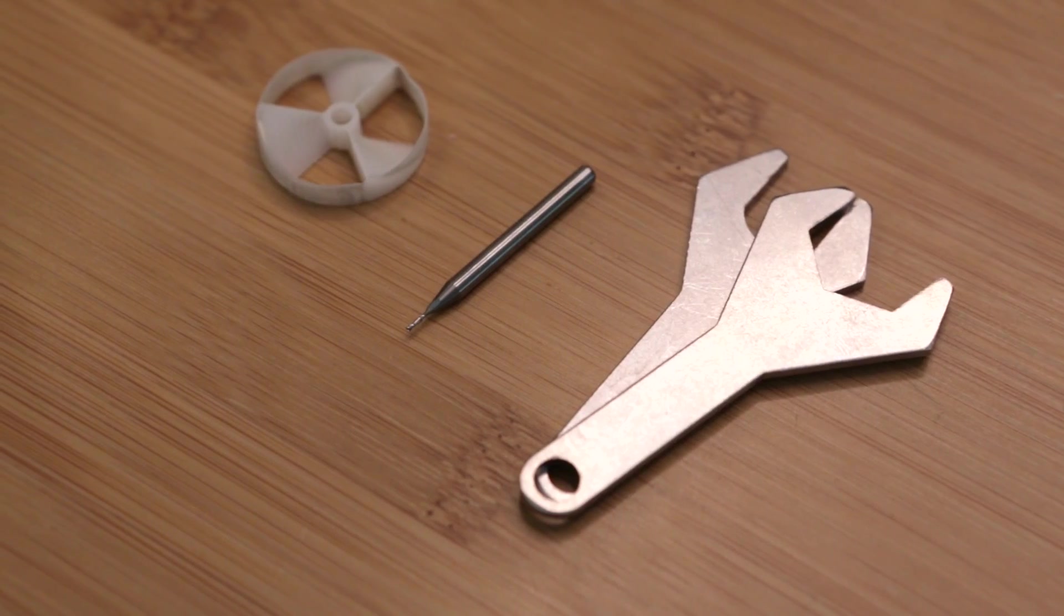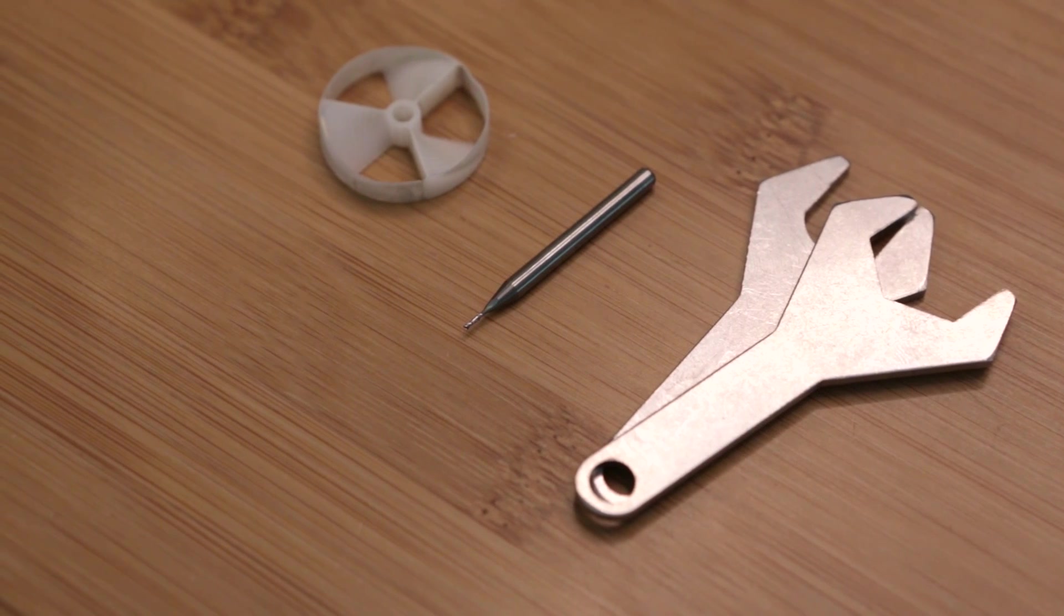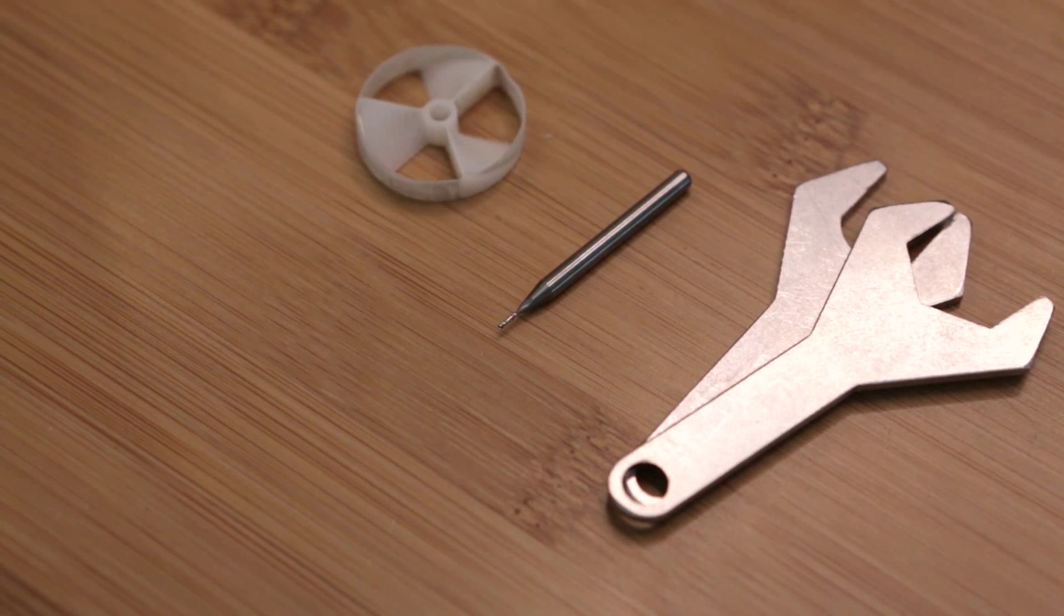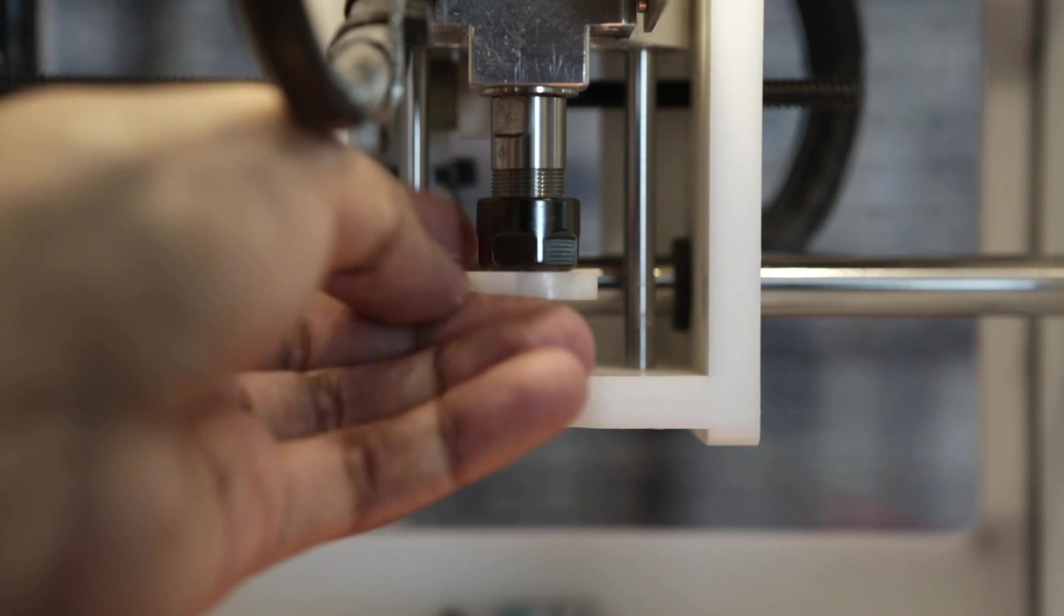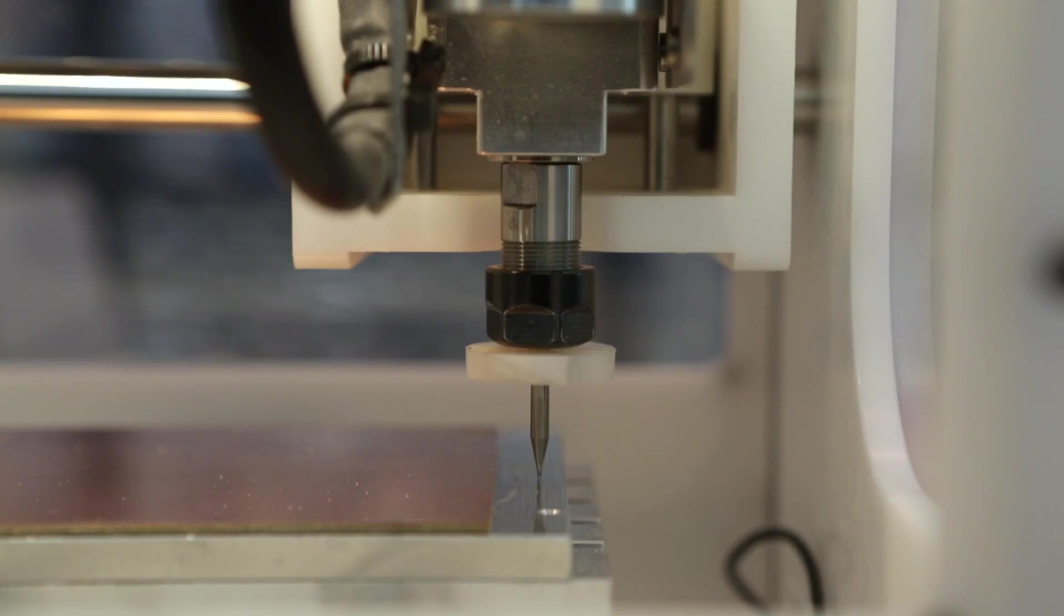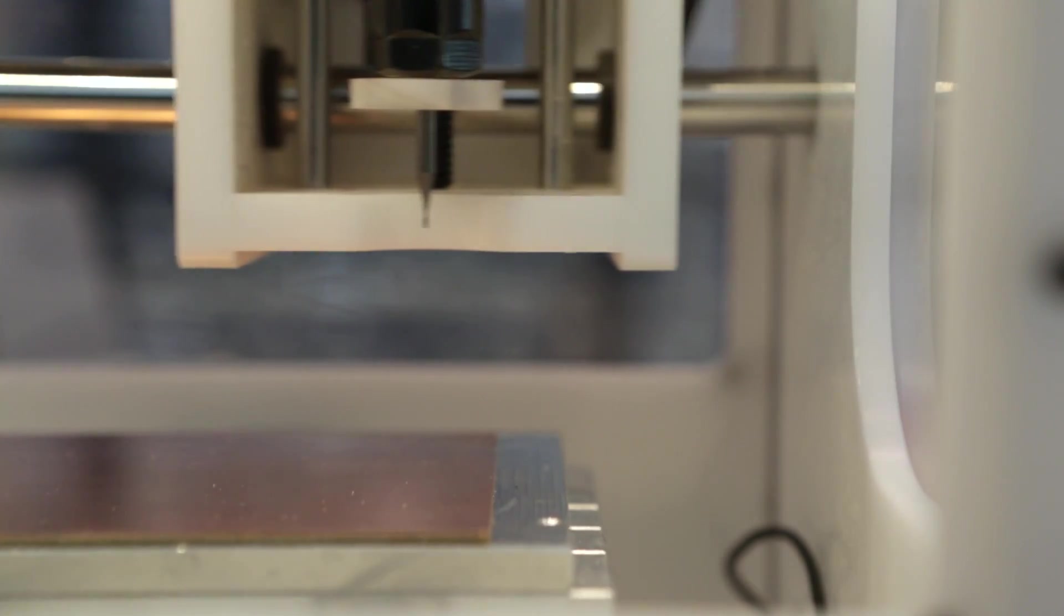I'm using a single tool for this and basically trying to avoid swapping out different tools for each operation. This 1/32 inch flat end mill will do all the traces, drilling the holes, and contouring the outline all in one go.